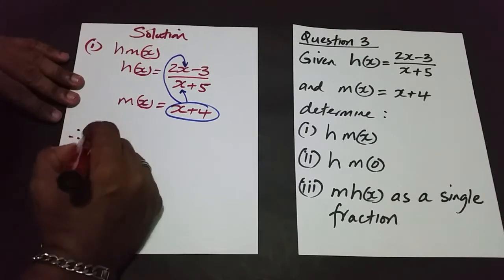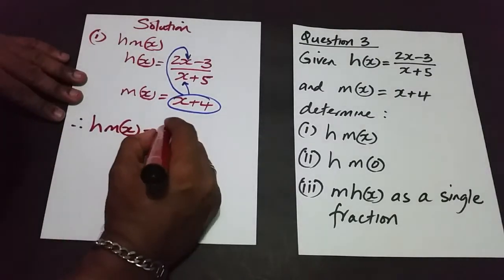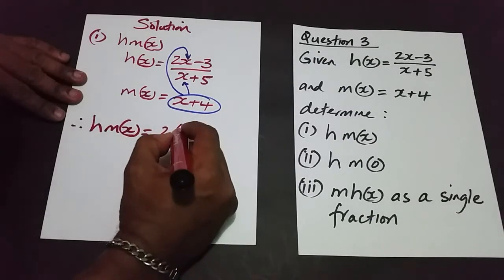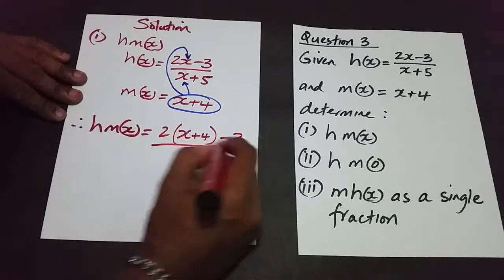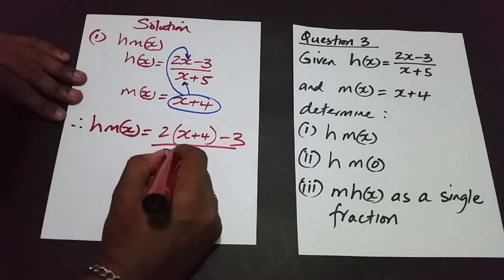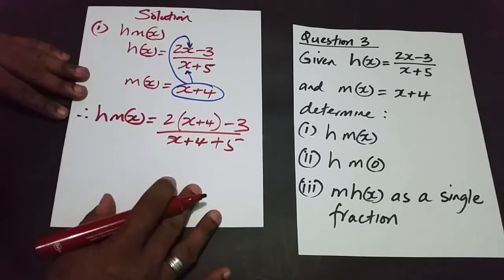So therefore h of m of x is going to be equal to 2 times x plus 4 minus 3 over, and replacing x with x plus 4, so it's x plus 4 plus 5.